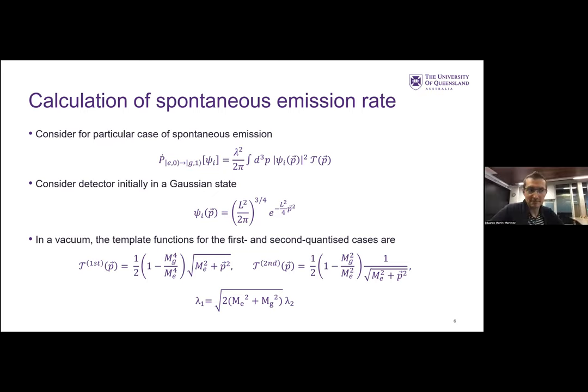If you derive the template functions, in the first quantized case, you have some square root for your detector, while in the second quantized case, interestingly, you get a reciprocal of the square root. There's an important difference there in the dynamics. These template functions are, in the relativistic case, even simpler than the non-relativistic case in the vacuum, which is a bit of a surprising result.